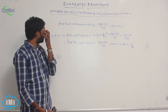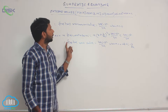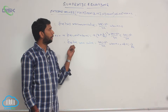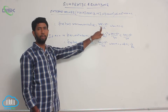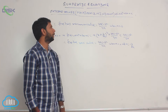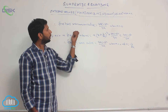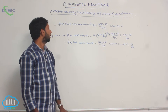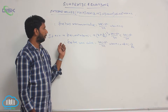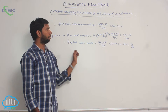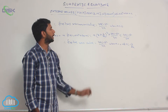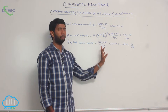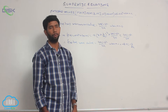Simply stated: if the coefficient of x squared is positive, the function has a minimum value of (4ac minus b squared) by 4a, occurring at x equal to minus b by 2a. If a is less than 0, the expression has a maximum value of (4ac minus b squared) by 4a, at x equal to minus b by 2a.